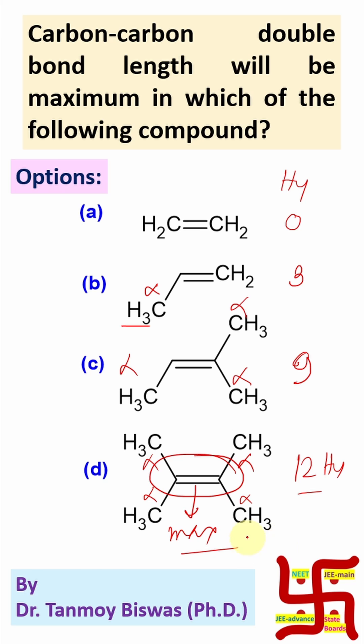Okay. So, this is the answer. Now, if you get this question in exam or less than 30 seconds, how could you solve? You need to remember one thing, higher the hyperconjugation, lower the bond order and higher the bond length.